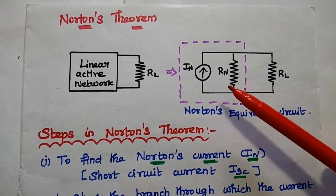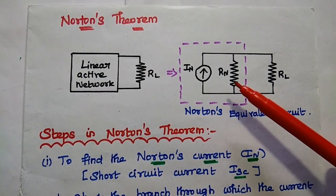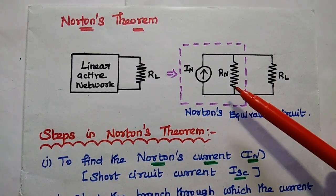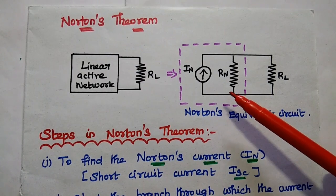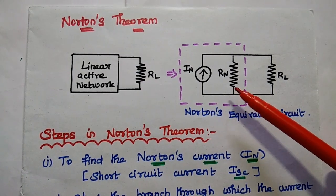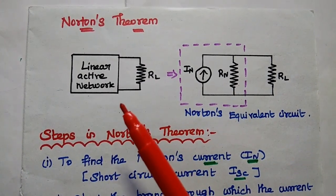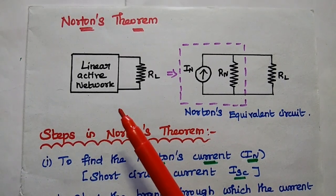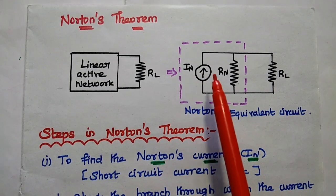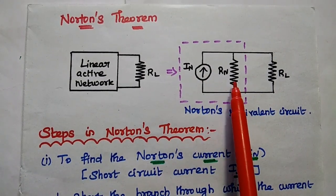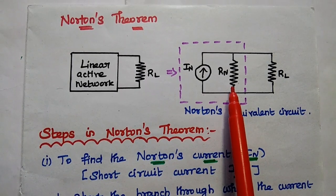Dear students, now we are going to solve one important problem in Norton's theorem. Before going to solve the problem, let's discuss the steps to be followed. Norton's theorem states that any linear active network can be replaced by a single current source in parallel with the equivalent resistance.